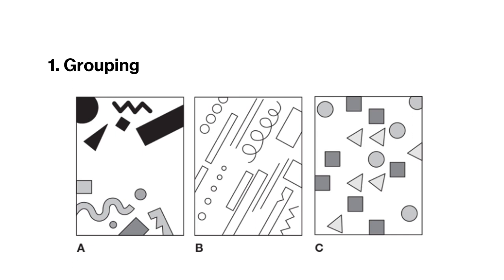The first one is called grouping. In our attempts to unify, psychologically we will group units that we see by orientation, shape, color, and location — where they are located in a composition.